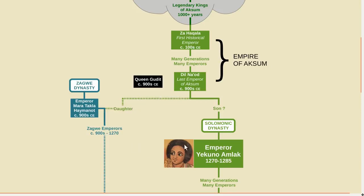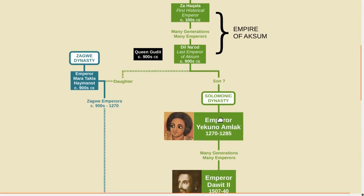The first emperor of the Zagwe dynasty married the daughter of the last emperor of Aksum in order to provide continuity. But in 1270, the Zagwe dynasty was defeated by Yakuno Amlak, and this is where the Solomonic dynasty begins historically. Yakuno Amlak claimed that the last emperor of Aksum actually had a son who escaped Gudit's massacre and was hidden away.